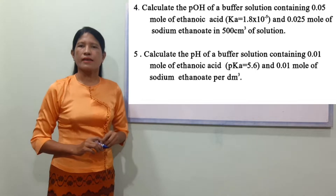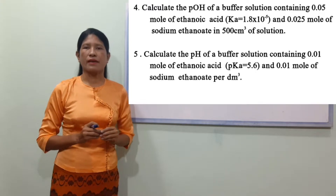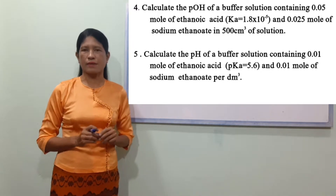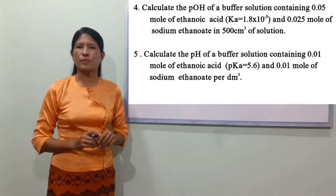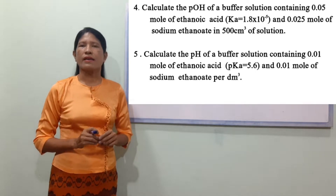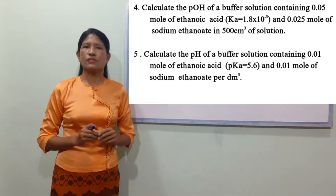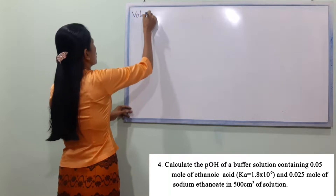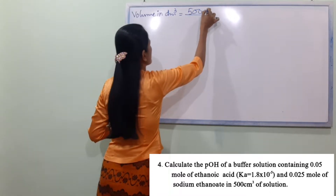Let's take a look at the solution. The volume is given as 500 cm³. We need to convert this: 500 cm³ equals 0.5 dm³ for the volume in dm³.